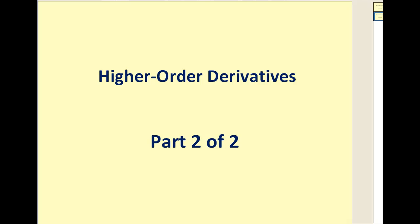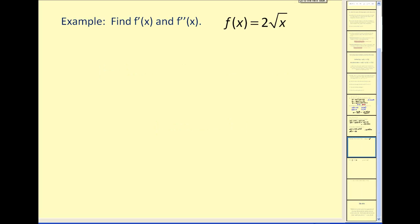This is the start of part two of two for higher order derivatives. Let's see if we can find some higher order derivatives. Here we want to find the first derivative and the second derivative of f of x is equal to two times the square root of x.